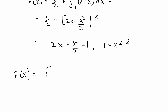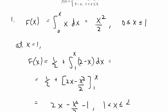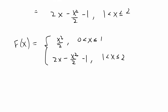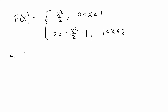Combining the two steps, the CDF is: x squared over 2 for x in (0, 1], and 2x minus x squared over 2 minus 1 for x in (1, 2]. We're done with the first step. For the next step we have to take the inverse of our CDF, so we need to find F inverse, which will also have two parts.